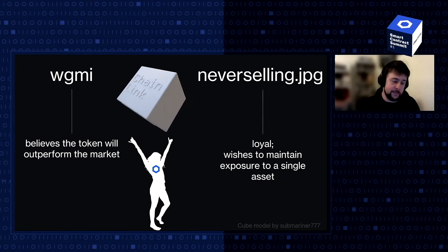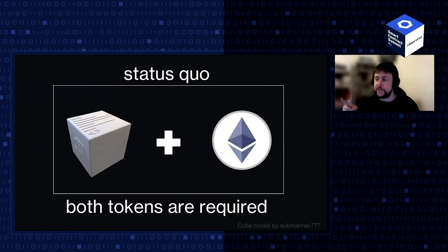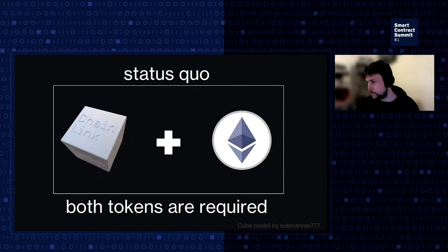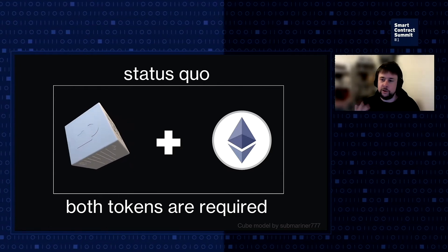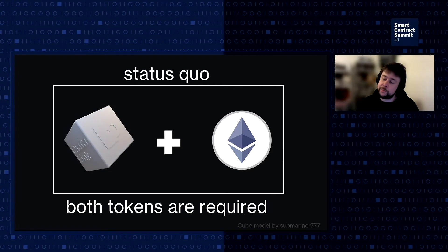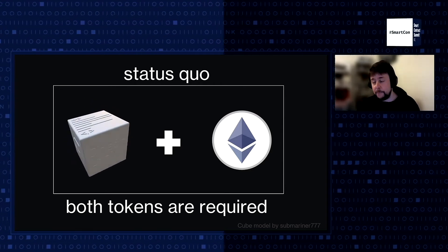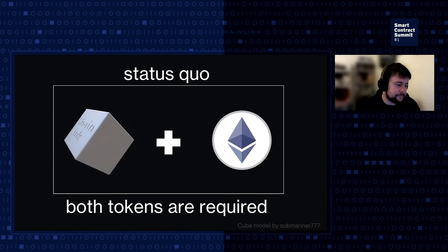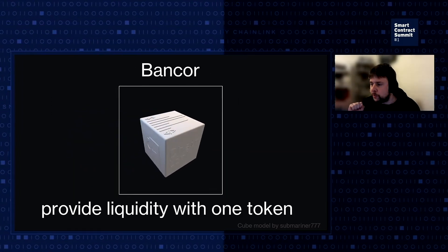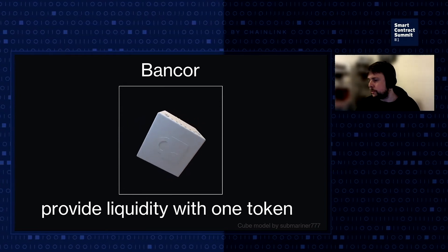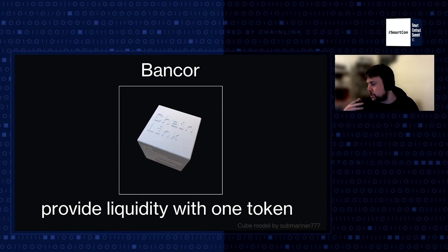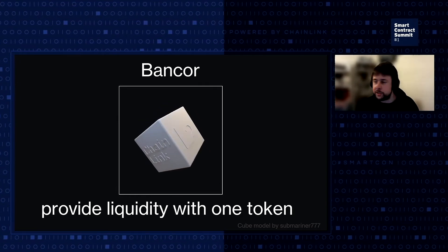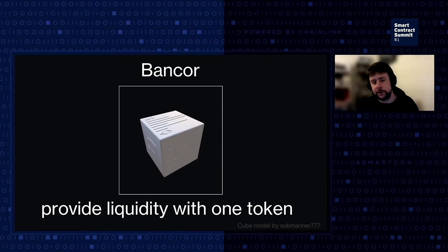If you're providing liquidity to AMMs, this can be problematic because both of these values are actually working against you in the status quo. If you need to hold two tokens in equal proportion, your portfolio can be at maximum 50% Chainlink, constantly rebalancing as prices move around. On Bancor version 2.1, you can provide liquidity with just one token and are not required to relinquish any portfolio exposure to Chainlink in order to participate. This is one of the things that Chainlink enthusiasts really saw value in, and why our communities have remained so close.